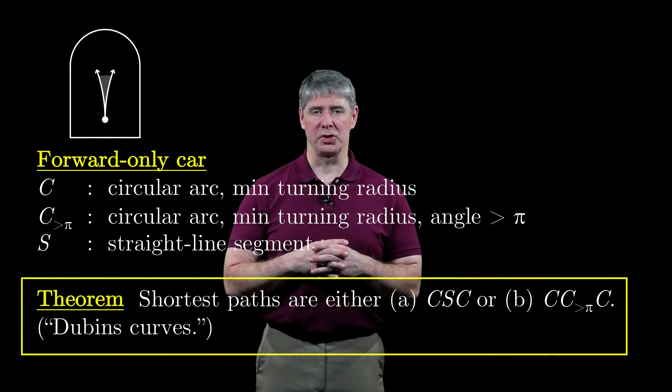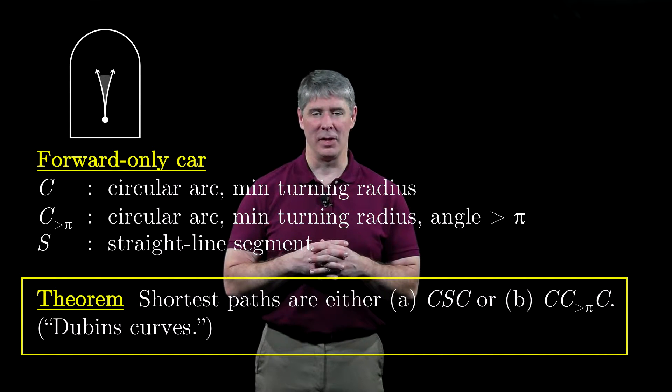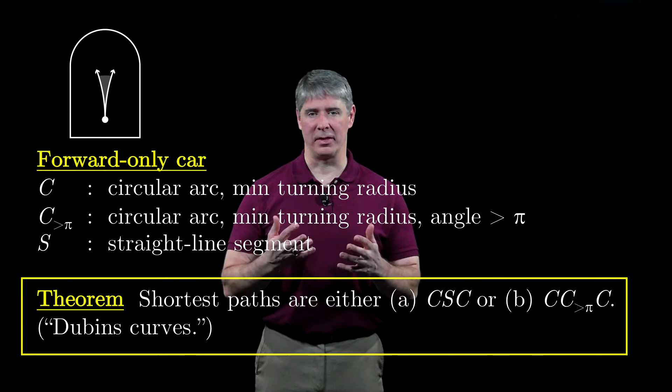Then it can be shown that all shortest paths between two configurations are either of the form CSC or C C greater than pi C.